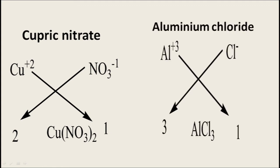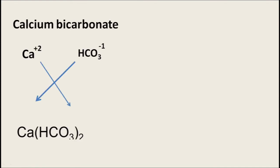Aluminium chloride: aluminium Al has charge +3 and chloride Cl has charge -1. After the crisscross method, Al takes 1 and chloride takes 3. The molecular formula of aluminium chloride is AlCl₃. Next, calcium bicarbonate: calcium Ca has charge +2 and bicarbonate HCO₃ has charge -1. After crisscross, Ca takes 1 and HCO₃ takes 2. The molecular formula is Ca(HCO₃)₂, representing calcium bicarbonate.